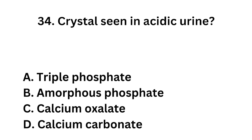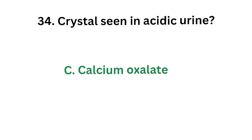Question number 34: Which crystal is seen in acidic urine? Option A: Triple phosphate. Option B: Amorphous phosphate. Option C: Calcium oxalate. Option D: Calcium carbonate. The correct answer is Option C: Calcium oxalate. The crystal seen in acidic urine is calcium oxalate.